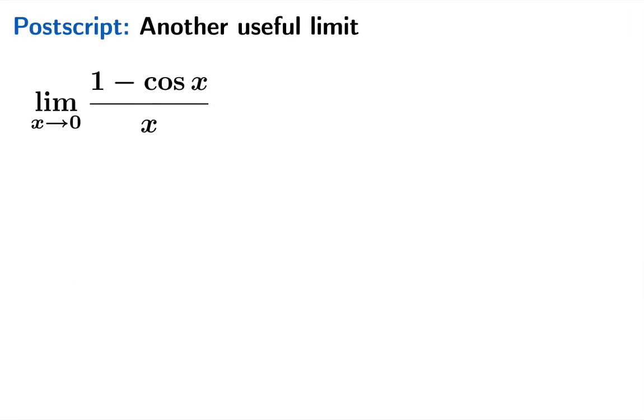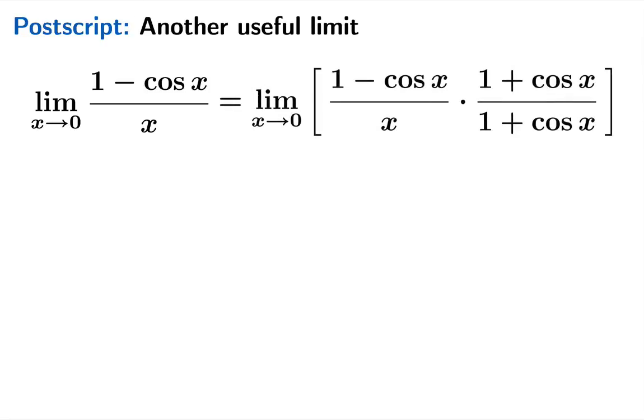Now as a postscript, we're going to look at another useful limit that will show up when we take the derivative of sine and cosine. So we're going to look at the limit as x approaches zero of one minus cosine x over x. If you try to plug in zero for x, you're going to see that this is also a zero over zero indeterminate form. We need to do some work. In this case, there's actually a little bit of clever algebra we can apply. We can multiply the numerator and the denominator by one plus cosine x. If that's not obvious as to why this should happen, it's a trick. You'd have to sort of know what's going on.